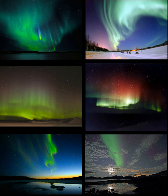Auroras seen within the auroral oval may be directly overhead, but from farther away, they illuminate the poleward horizon as a greenish glow, or sometimes a faint red, as if the sun were rising from an unusual direction. Auroras also occur poleward of the auroral zone as either diffuse patches or arcs, which can be subvisual. Auroras are occasionally seen in latitudes below the auroral zone when a geomagnetic storm temporarily enlarges the auroral oval.